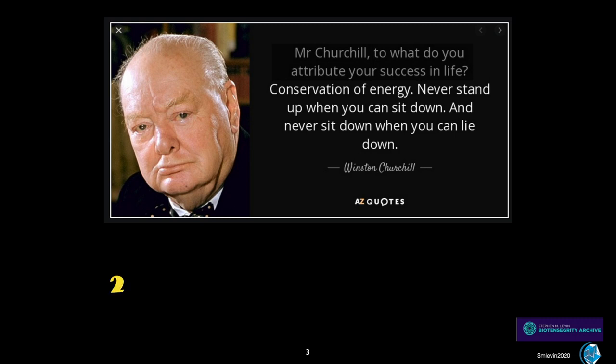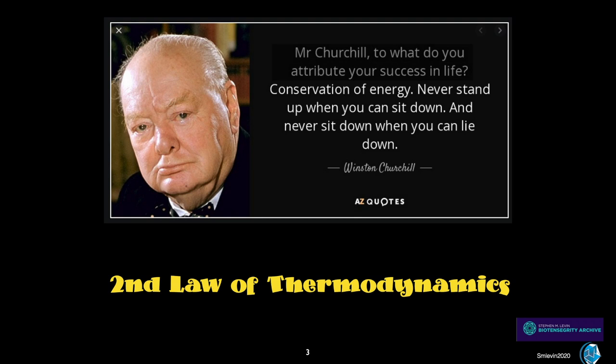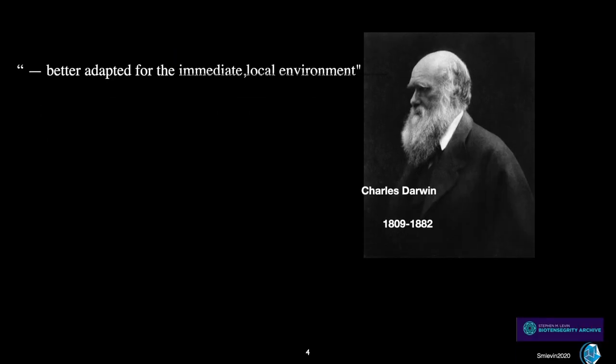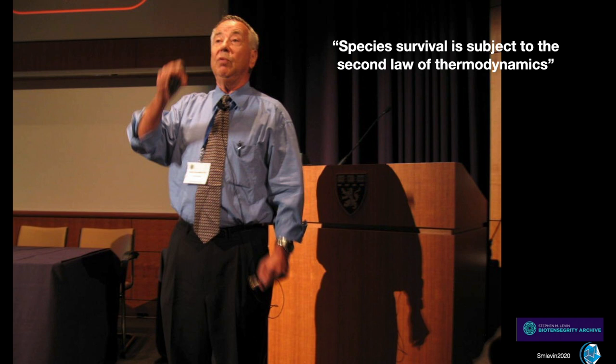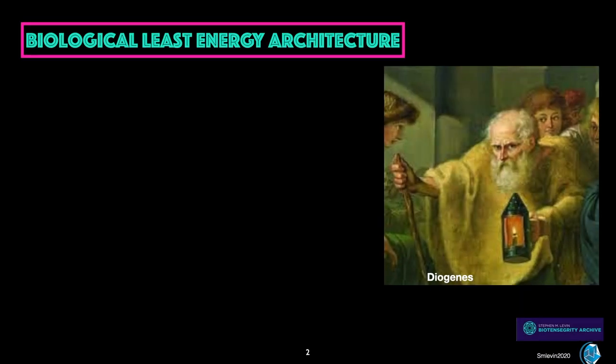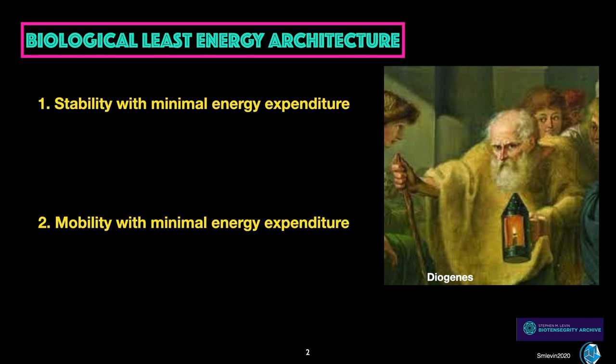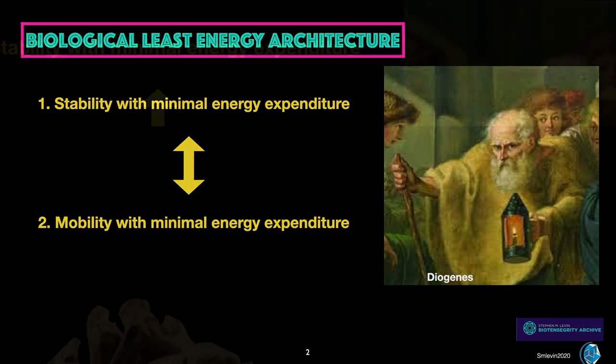This transposes into the second law of thermodynamics and is consistent with Charles Darwin. In his thesis of survival of the fittest, he's really talking about the second law of thermodynamics. My friend Sergei Grecovetsky put it very succinctly, species survival is subject to the second law of thermodynamics. When we're looking at biological architecture, we're looking for biological least energy architecture, which is stability with minimal energy expenditure, mobility with minimal energy expenditure, and the ability to switch back and forth easily, also with minimal energy expenditure.